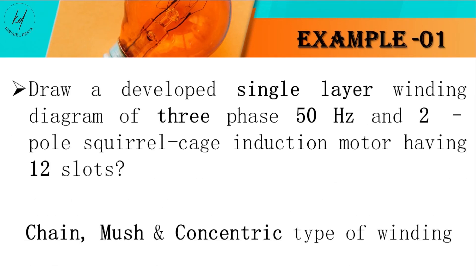Let's begin from a motor having a 12-slot 2-pole squirrel cage 3-phase induction motor, whose chain, concentric, and mesh type of windings are going to be illustrated.